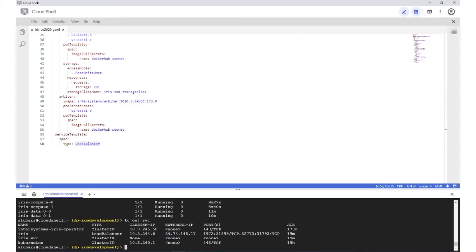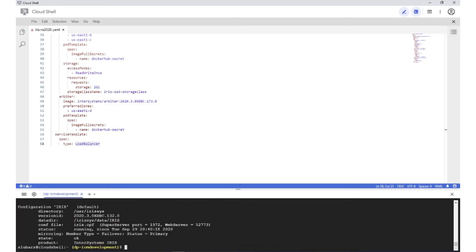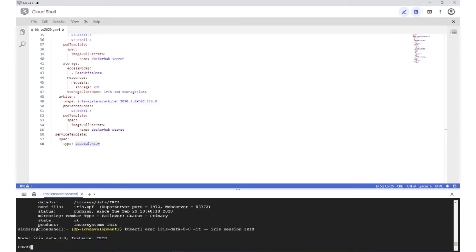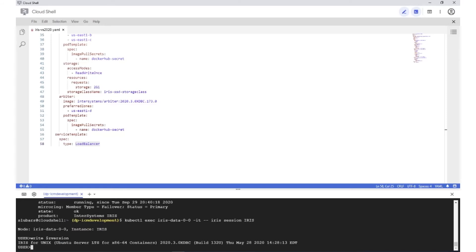We can also ascertain the version from the command line by opening up a shell directly on one of the iris instances. The iris list command shows us we're running 2020.3. We can actually open an iris session there, write out the version, and see that it's 2020.3.